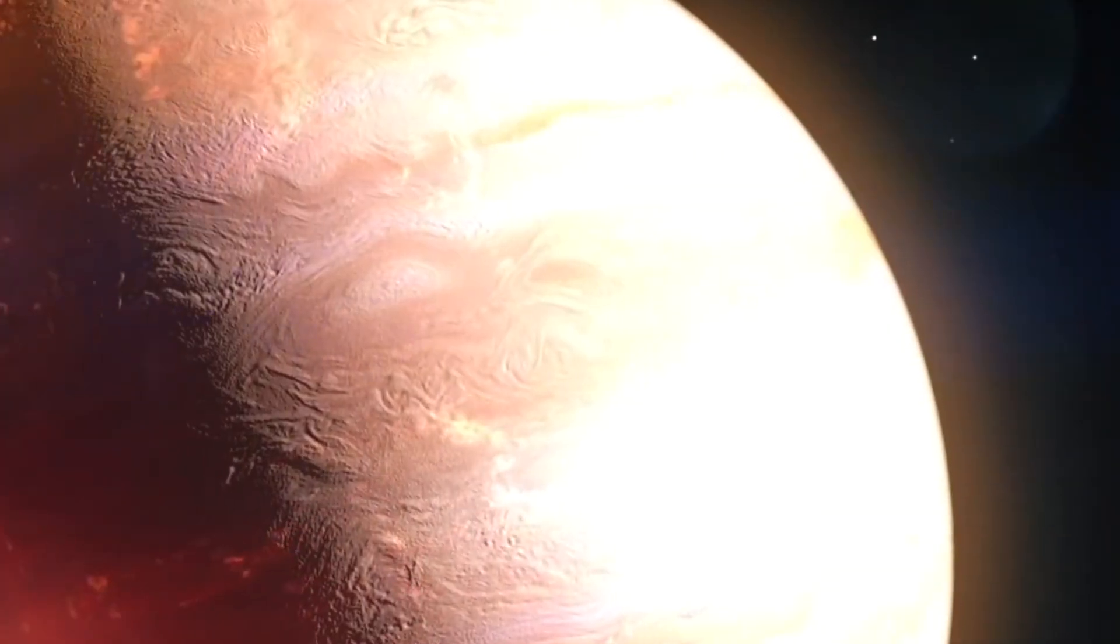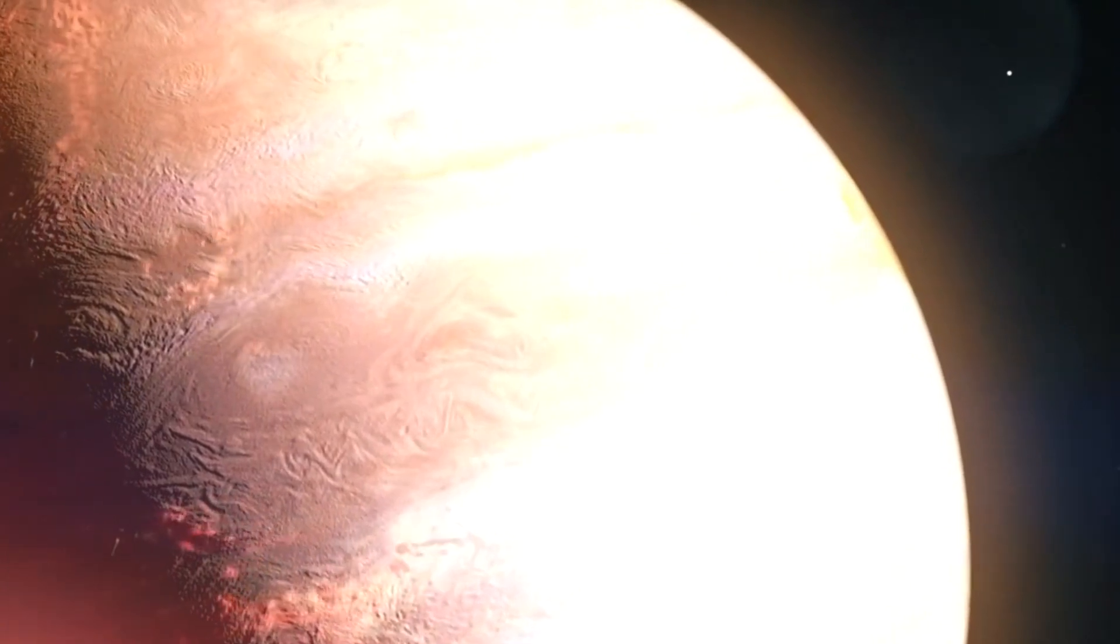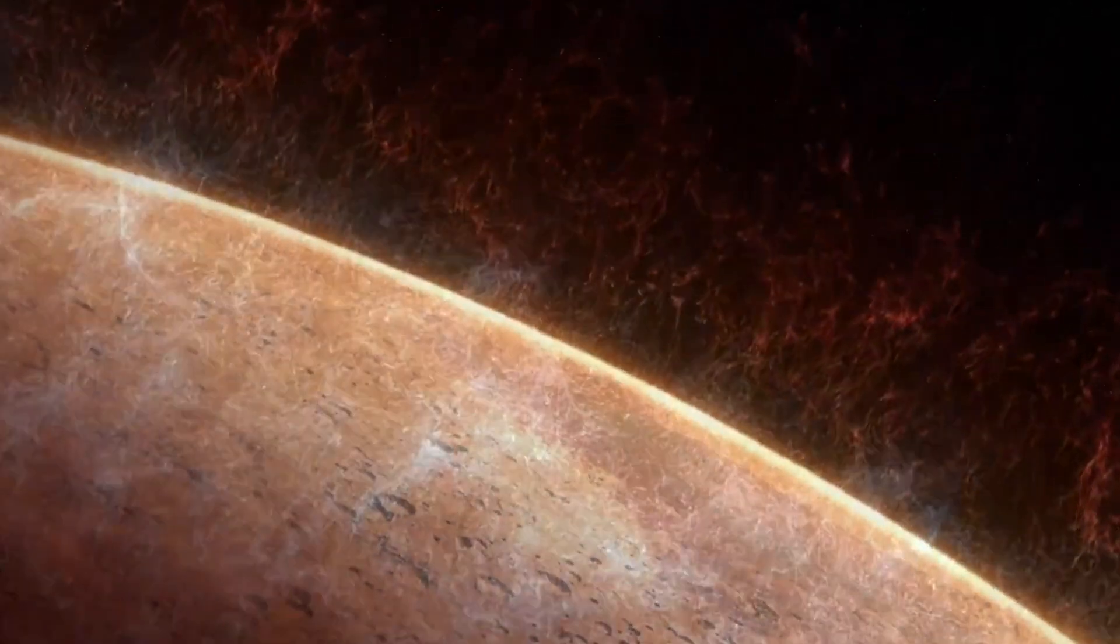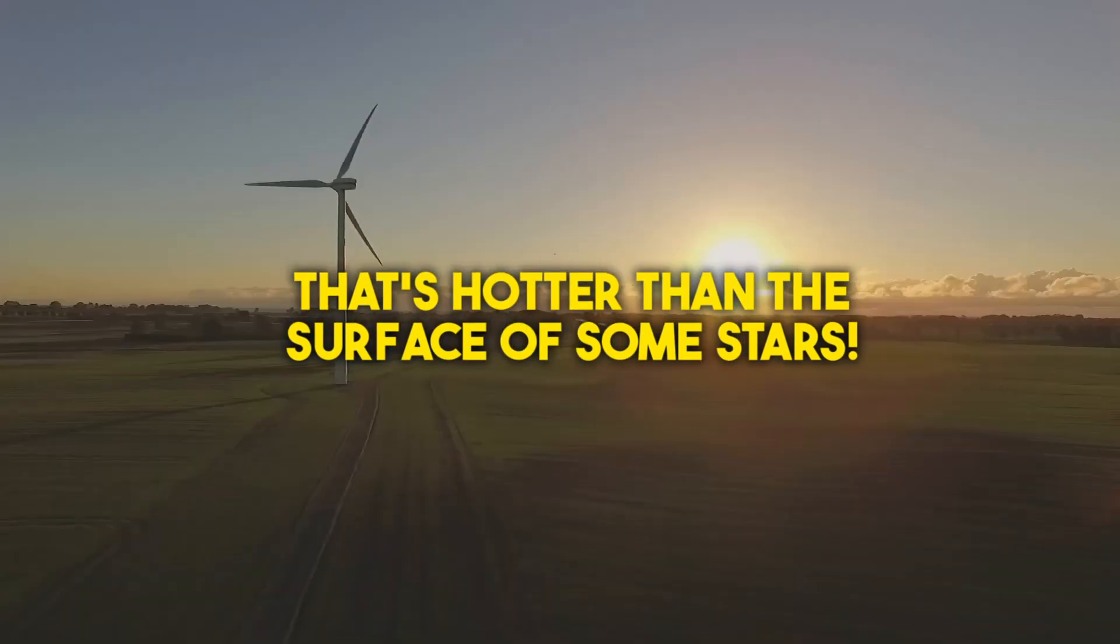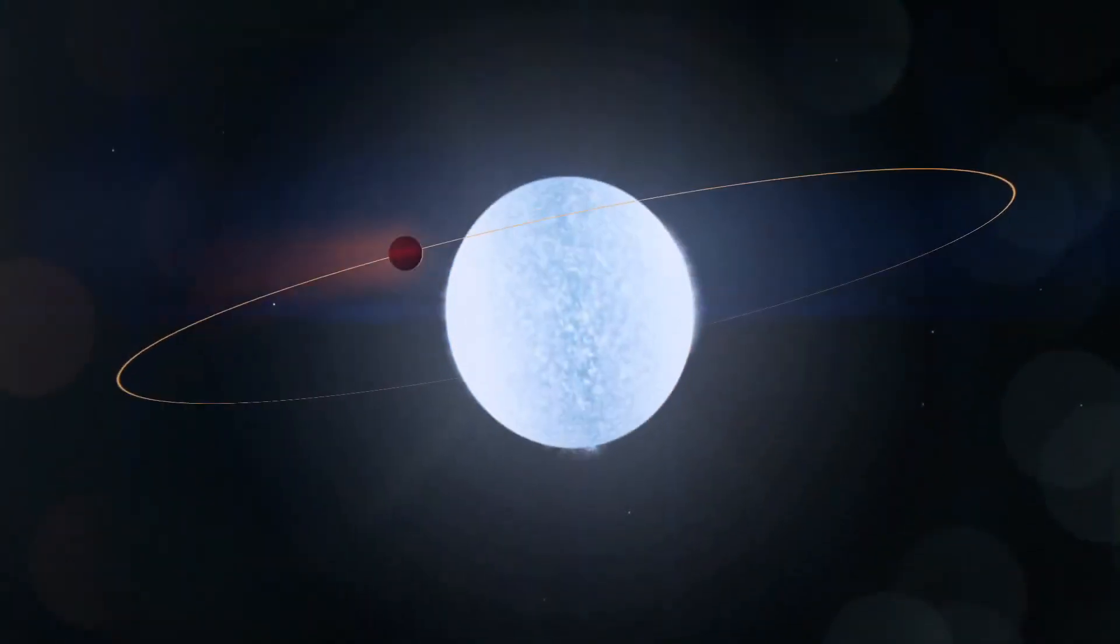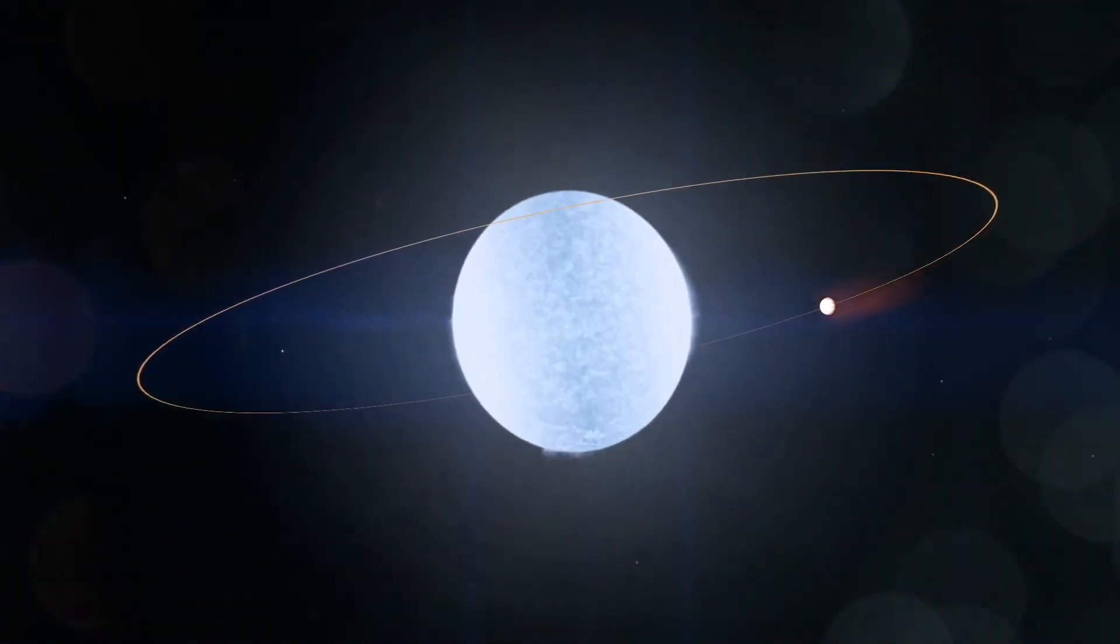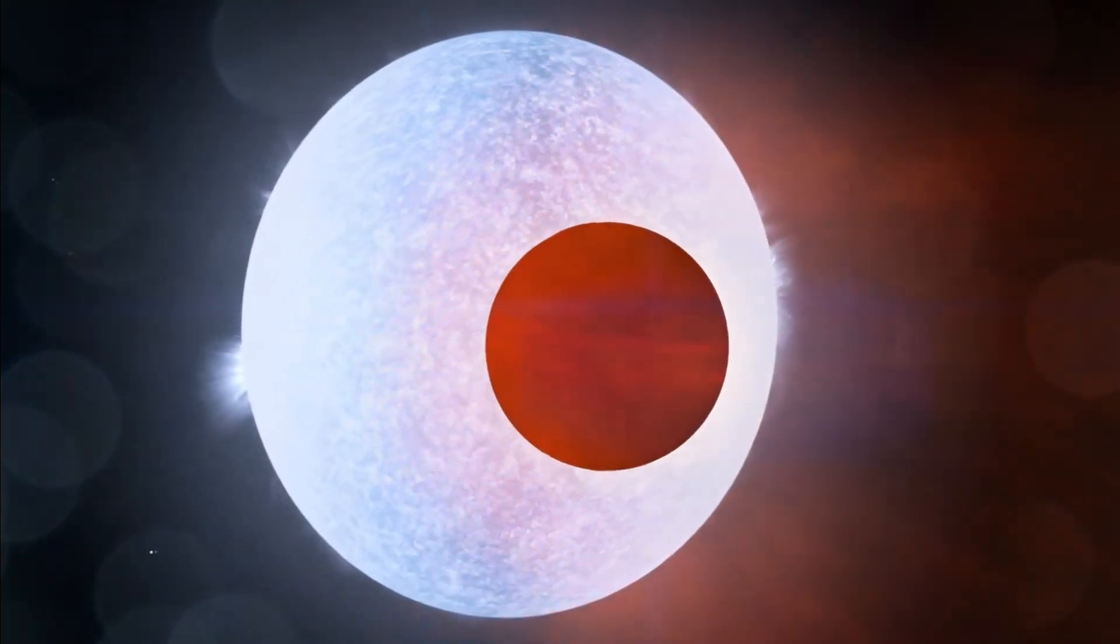Brace yourself for this. KELT-9b boasts a mind-boggling surface temperature of 7,800 degrees Fahrenheit, or 4,300 degrees Celsius. That's hotter than the surface of some stars. If Mercury were to swap places with KELT-9b, it wouldn't stand a chance. It would melt into a bubbling pool of molten lava faster than you can say hot potato.